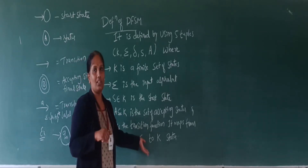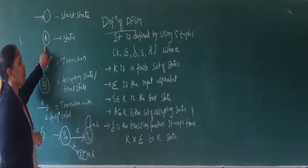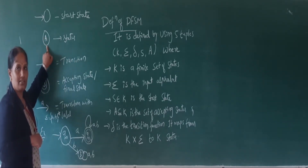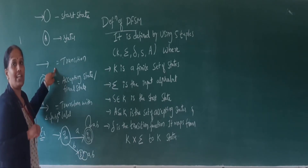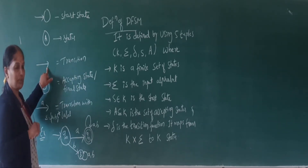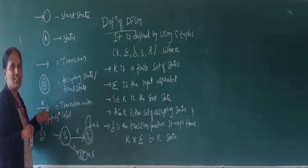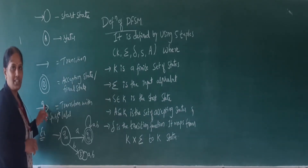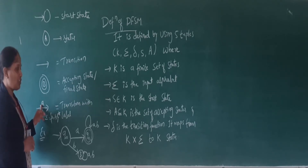The notations used to draw the DFSM are: a circle represents a state, which can be named using any character or number — for example, a circle named A. An arrow or edge indicates a transition, which shows the change of state. A double circle indicates it is a final state or accepting state. An arrow with a label shows the transition between states after accepting string characters; those characters are specified on the arrow and are called transitions with labels.